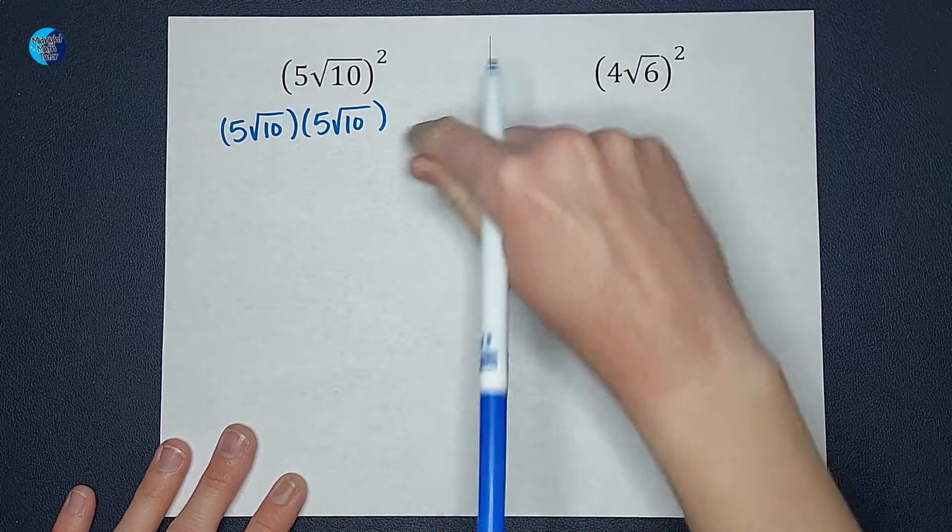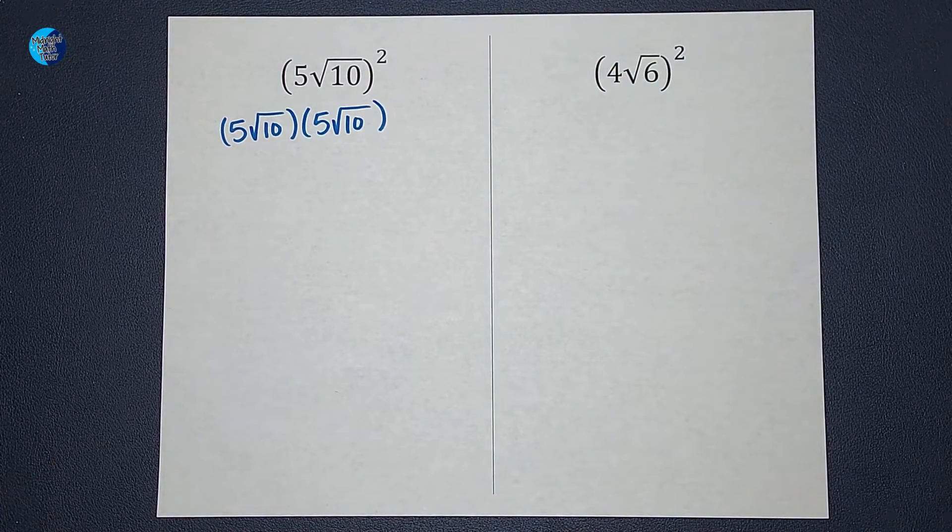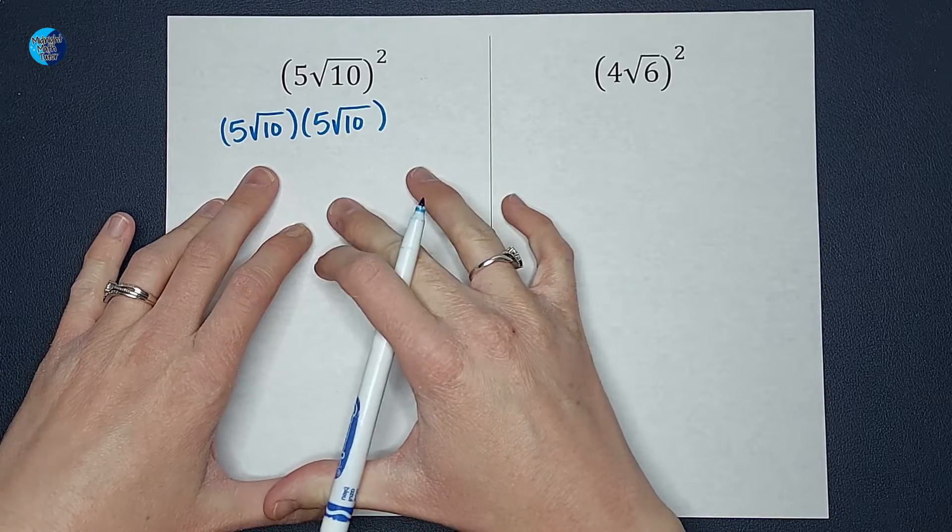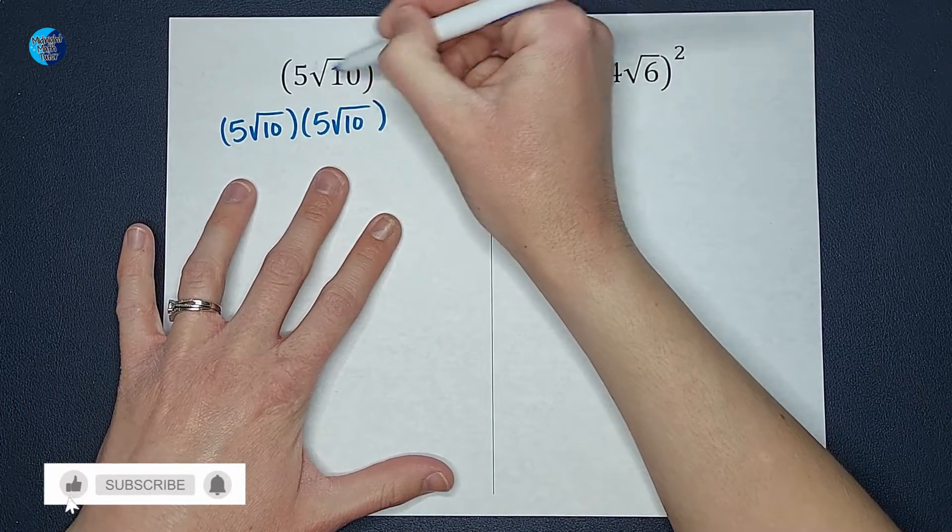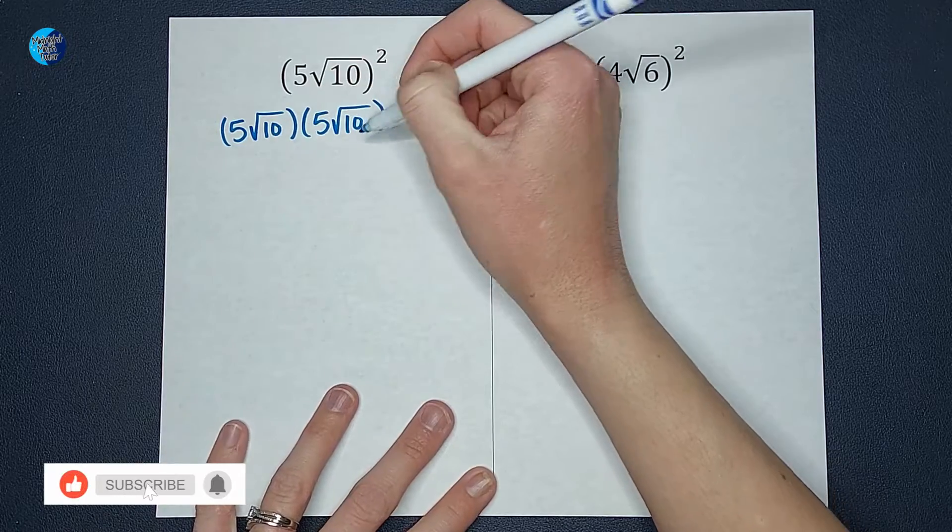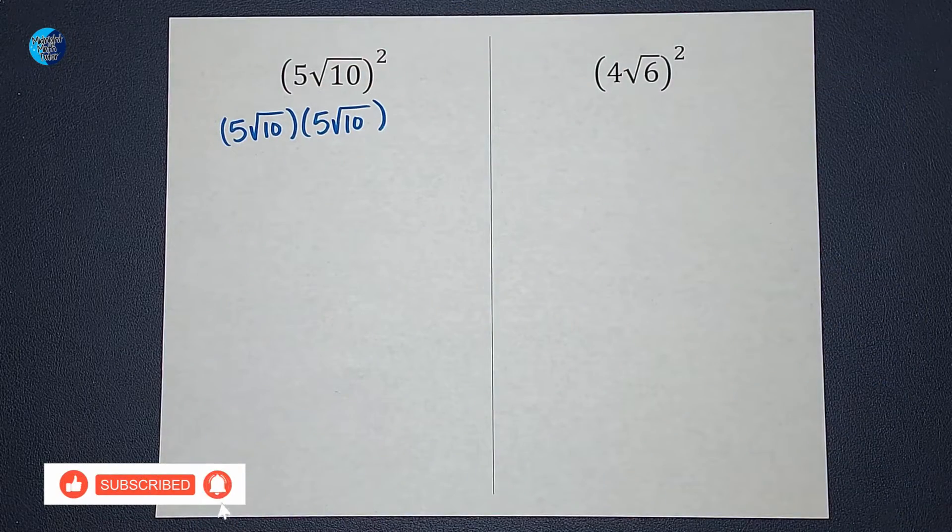That's really what this means, right? Now, when you see this and we're multiplying, you might be tempted to do our rainbows, right? Our foiling or whatever you might call it. But we're not going to do that.